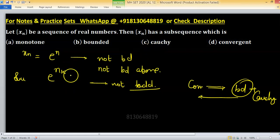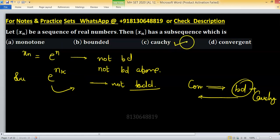So if this sequence is not bounded, it cannot be cauchy, cannot be convergent, and option b is discarded. So the remaining one is monotone.